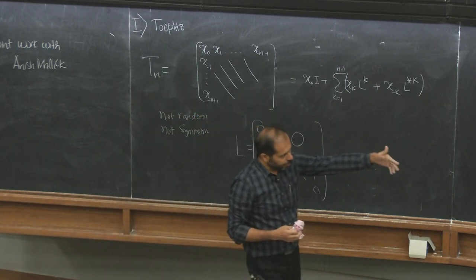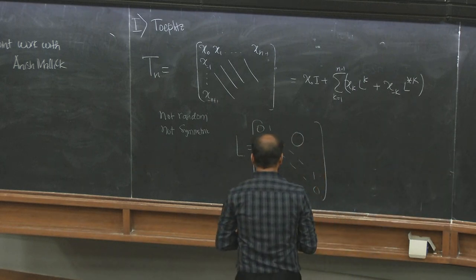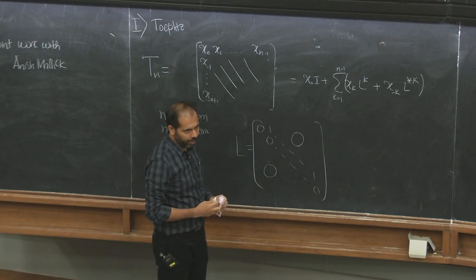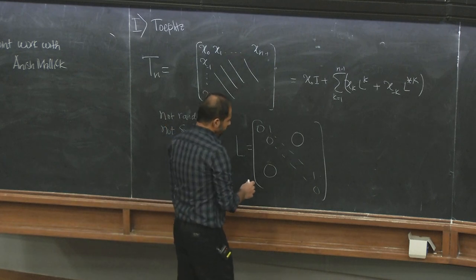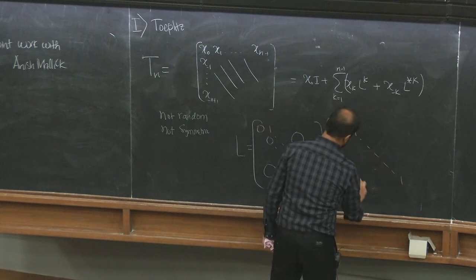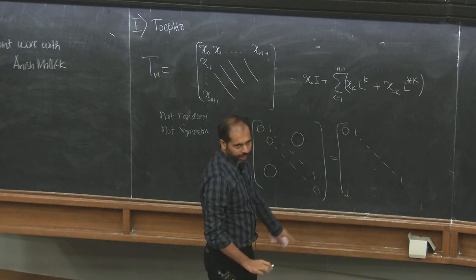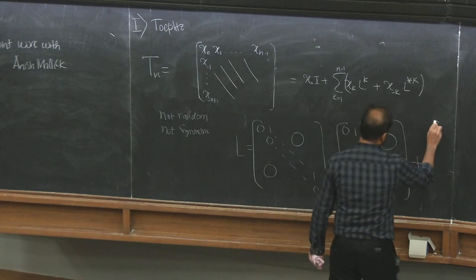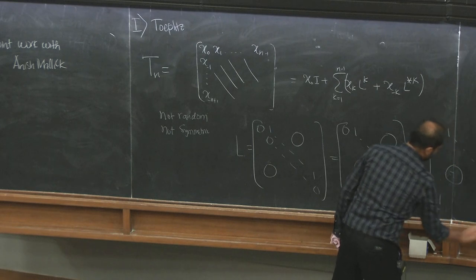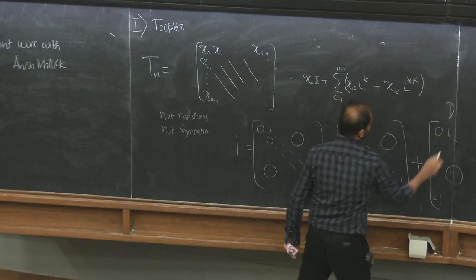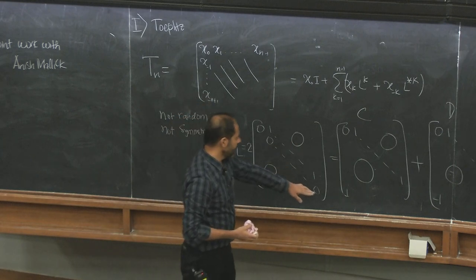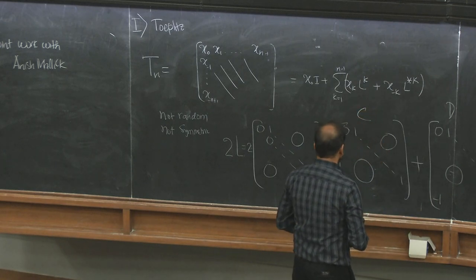A lot of things about Toeplitz matrices relate to the fact that they look almost like circulant matrices — the idea in the Sen-Virag paper as well. The key step is to write L = (C + D)/2, where C is the circulant shift matrix with a 1 at the (n,1) corner, and D is similar but with a -1 at that corner. C is a circulant matrix and D is a twisted circulant. Both C and D are unitary.